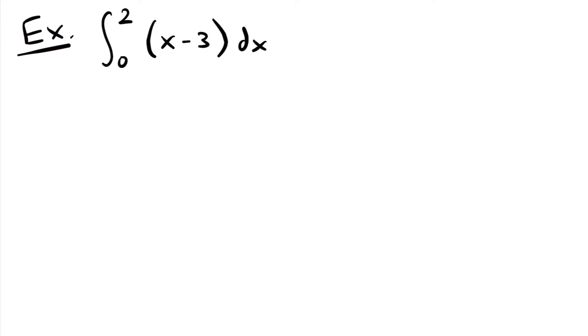Welcome back. Let's start with this example. We have the definite integral from 0 to 2 of x minus 3 dx, and so we'll start by finding the antiderivative of this function, and we'll go term by term.